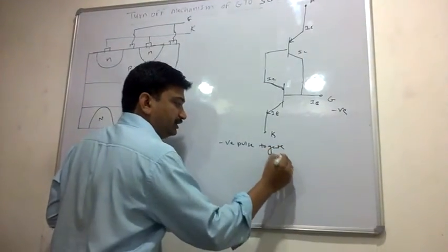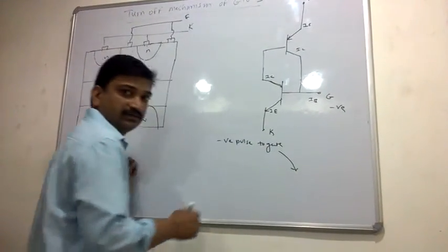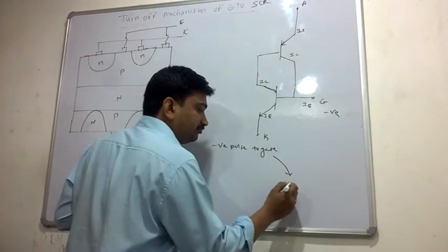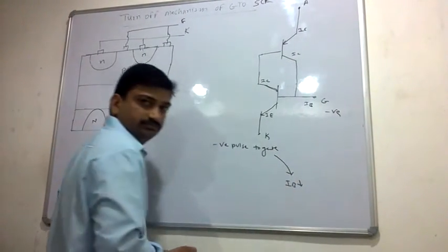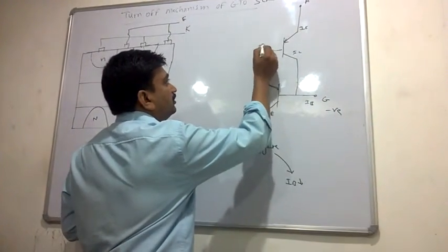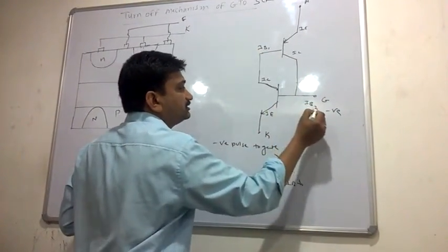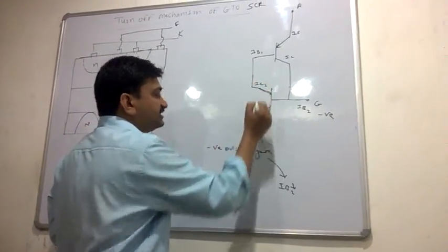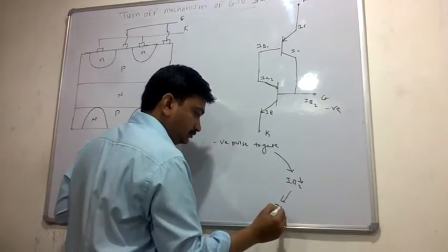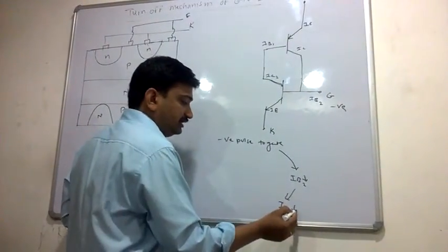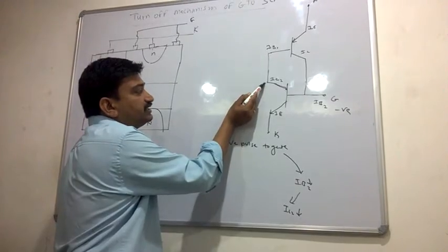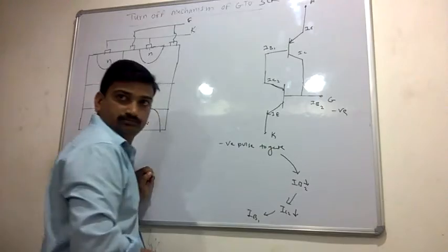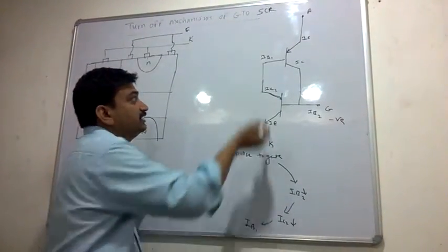A negative pulse to the gate reduces the base current IB1. As IB1 decreases, IC1 also decreases.